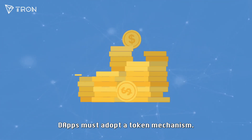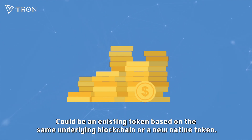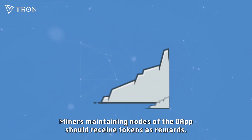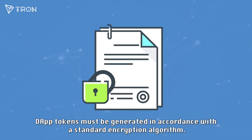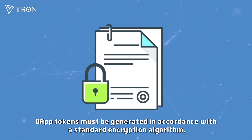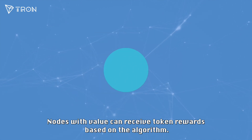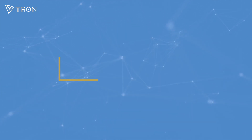dApps must adopt a token mechanism — could be an existing token based on the same underlying blockchain or a new native token. Miners maintaining nodes of the dApp should receive tokens as rewards. dApp tokens must be generated in accordance with a standard encryption algorithm; nodes with value can receive token rewards based on the algorithm.